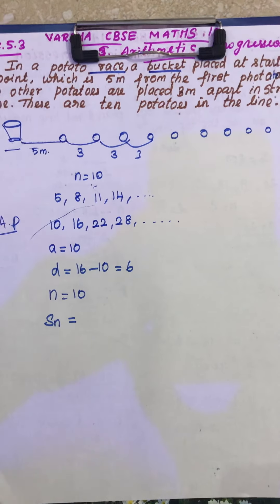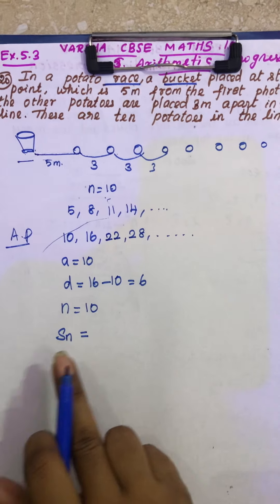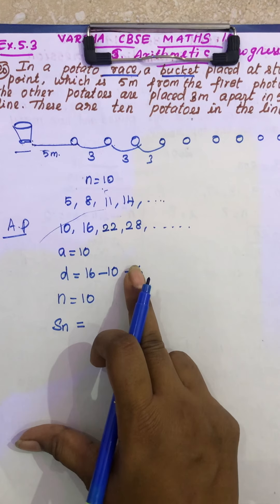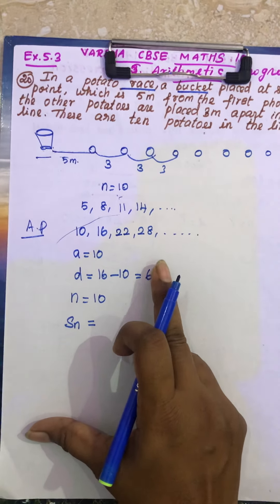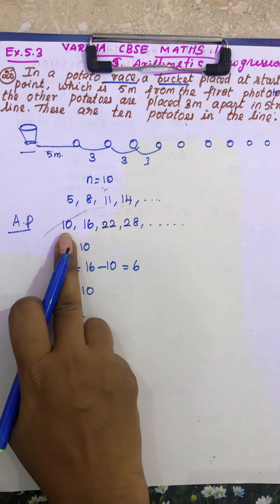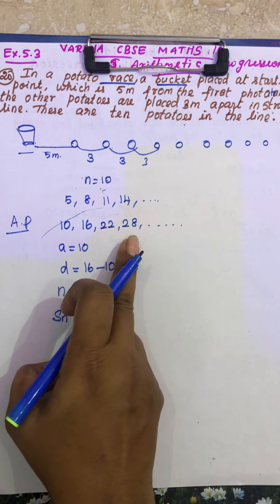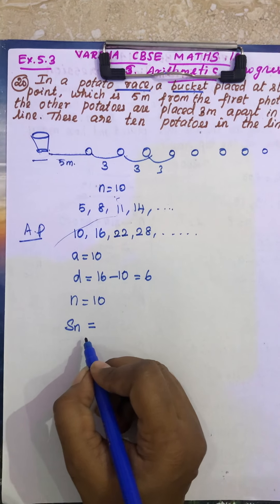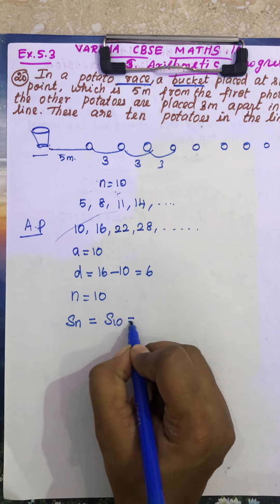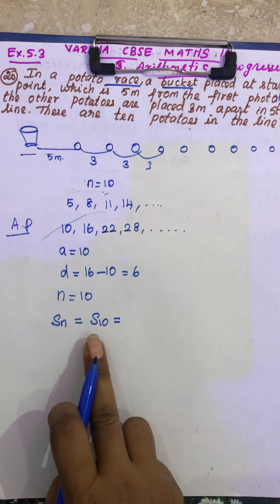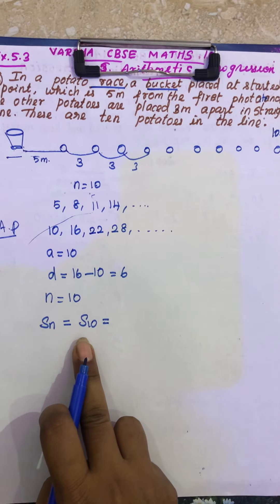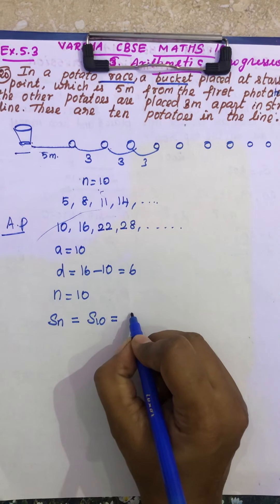That's it students, it is not a very big sum, so it is a very simple sum, if you understand easily you can find it, so easy. So see, this is 10, 16, 22, 28 and etc., so this is SN. So N is 10, only there are 10 potatoes there.